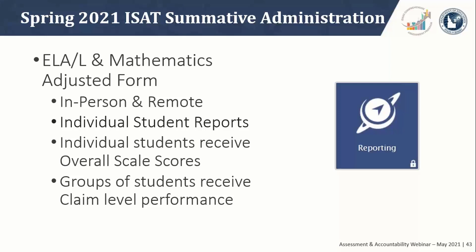No matter if the student is administered their summatives in-person or remotely, he or she will have available an individual student report (ISR). Those ISRs will be available to districts and schools to distribute to parents and students. That ISR will have an overall scale score and proficiency level. However, claim-level performance data will be available at the aggregate — meaning claim-level performance data will be in our reporting system and will be available for rosters of students. Student performance data will be available in reporting approximately 10 days after the student has completed and submitted both the CAT and PT portions of the ISAT.